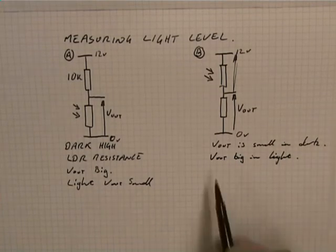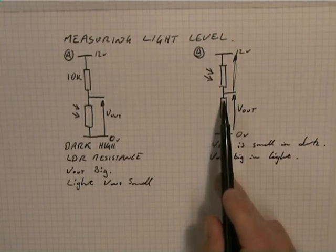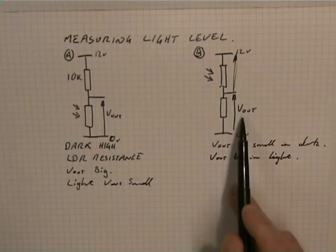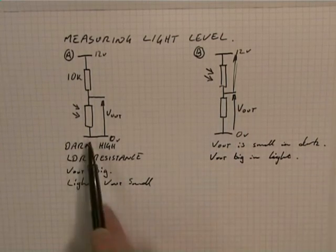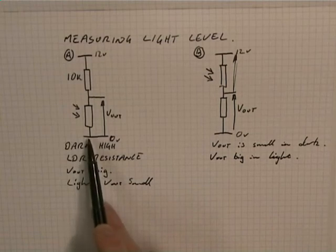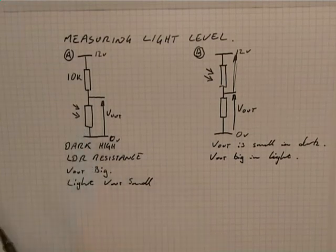So if you like, this is a light sensor which gives a high output in the light, and this is a dark sensor which gives a high output, a high voltage output, in the dark.